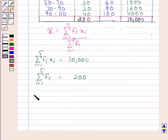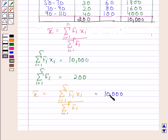So X bar is equal to 10,000 divided by 200, and this is equal to 50. Hence our required answer is 50.